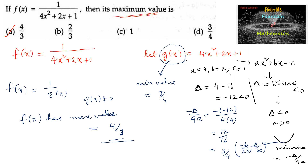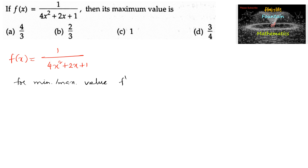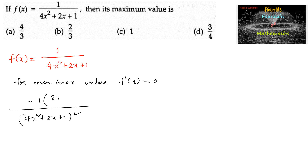Now, using differentiation, let us solve it. f(x) equals 1 upon 4x² plus 2x plus 1. To get the minimum or maximum value, f′(x) is set equal to 0. Differentiating, we get the numerator as minus 1 times the derivative of 4x² plus 2x plus 1, which is 8x plus 2, all over (4x² plus 2x plus 1)² equal to 0. So 8x plus 2 equals 0, since the denominator is positive. Therefore x equals minus 2 by 8, that is x equals minus 1 by 4.